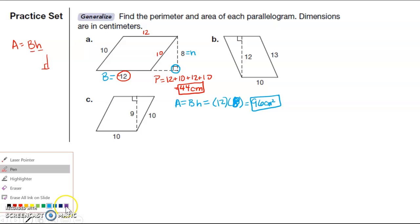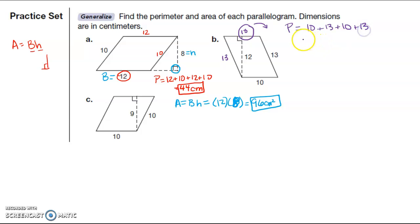Let me change colors here. B. So if this side is 13, this side is going to be 13, and if this side is 10, this side is 10. So my perimeter is when I add all the sides up, so I'll start here and go this direction: 10 plus 13 plus 10 plus 13. 10 plus 10 is 20, 13 plus 13 is 26, so 46 centimeters.